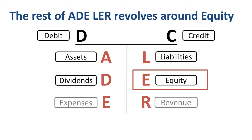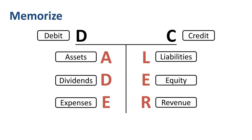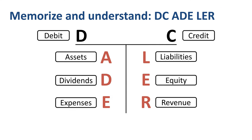Profitable companies could consider paying a dividend to shareholders — a distribution of the profit. This would decrease equity. As the normal balance for equity is a credit, a debit through dividends would reduce it. Debits and credits — DC ADE LER. Remember: memorize it and understand it.